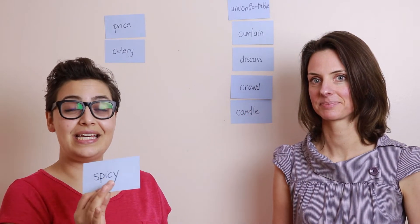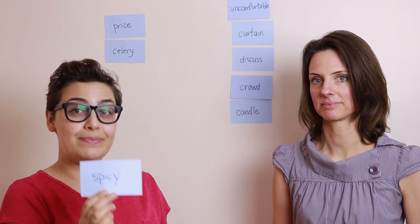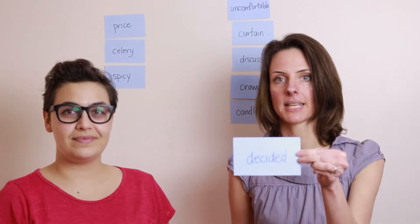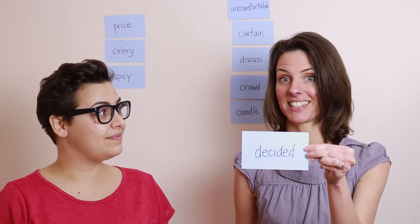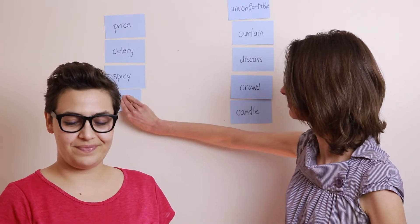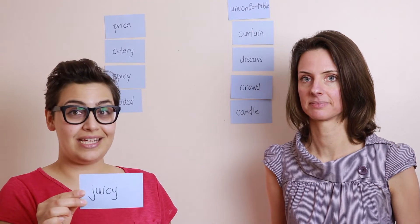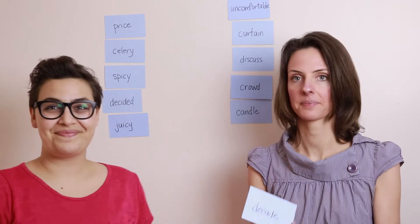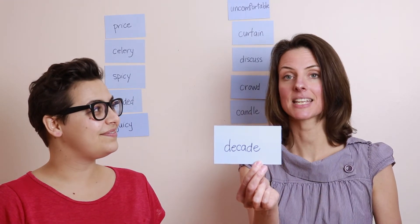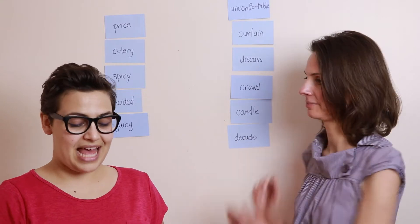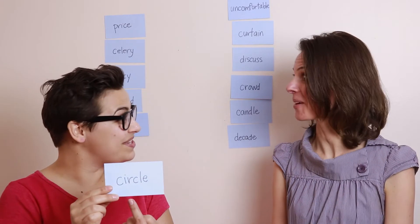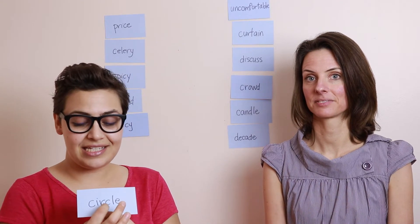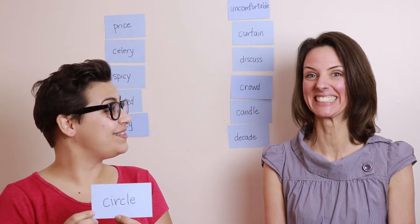This one is C-Y, so it's soft: 'spicy.' 'Decided' — another soft one. 'Juicy' — another soft one. 'Decade' — decade is C-A, so it goes in the hard category. Last one: 'circle.' This has both! It's got one C followed by an I, so that first C is soft. And then it's got a C followed by an L, so it's a hard one. Circle — we'll put it right in the middle.